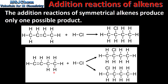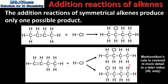When but-1-ene reacts with hydrogen chloride there are two possible products: 1-chlorobutane and 2-chlorobutane. To predict the major product of the reaction we apply Markovnikov's rule, which is only covered in the higher level syllabus. For higher level students, in this case the major product will be 2-chlorobutane. This is due to the stability of the secondary carbocation.